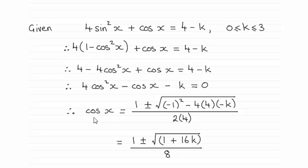So for the quadratic formula, cosine of x equals minus b, so it's going to be minus minus 1, which is 1, plus or minus the square root of b squared, minus 1 all squared again, minus 4 times a, which is the 4, times the c, which is the minus k.